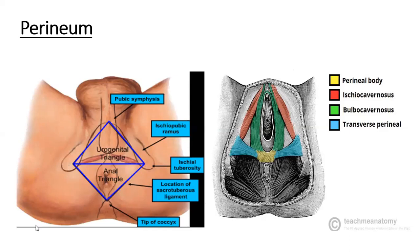The roof is formed by the pelvic floor, and the base is formed by the skin and fascia. I hope you have understood the boundaries of the perineal compartment. Now let's move on to the subdivisions of the perineum.